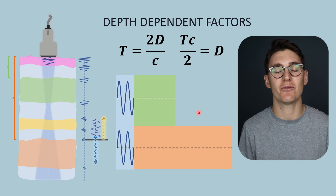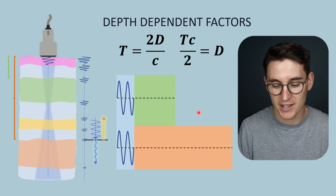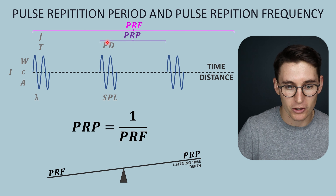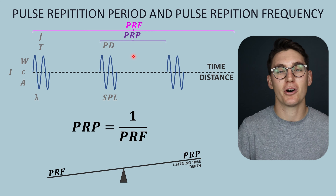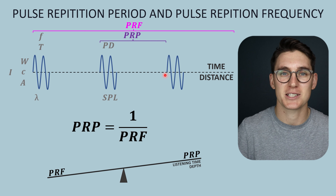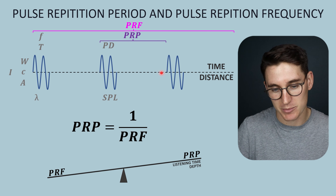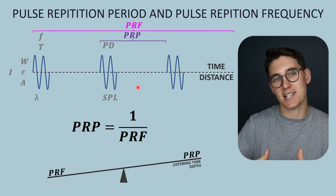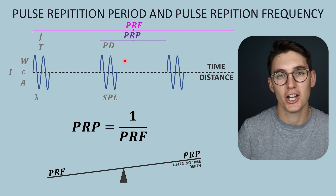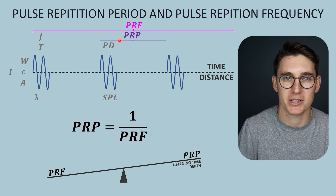That change in receive time influences three separate remaining factors in our pulse echo sequence. The first two are related to one another. The pulse repetition period describes the amount of time between the start of one pulse and the start of the next pulse — it is the transmit time added to the receive time. How long does it take from when we generate a pulse until we generate our next pulse? That is our pulse repetition period. As we image shallower depths we can reduce our receive time and reduce our pulse repetition period.